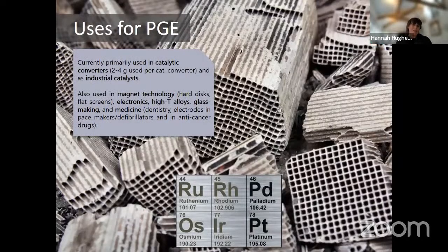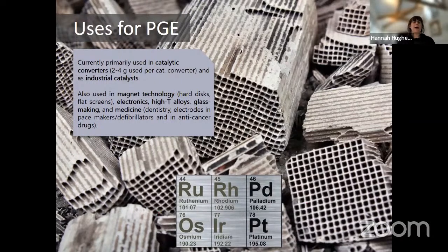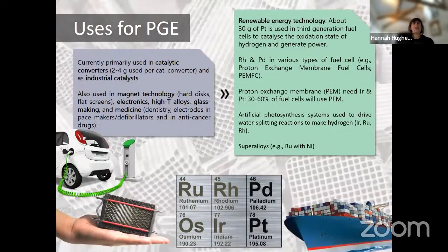The big use of PGE that a lot of people think about at present is catalytic converters — certainly for rhodium, and also for platinum and palladium. It's around two to four grams of PGE used per catalytic converter for an average car. The catalytic properties of PGE are also widely used for various industrial processes and the production of industrial solvents. Thinking about future uses of PGE and how that will affect their status as critical raw materials and their pricing is really important.